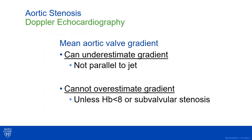Doppler echocardiography cannot overestimate the gradient unless the patient is severely anemic, where decreased blood viscosity means the 4V-squared relationship doesn't apply. But it can underestimate the gradient if you don't have an adequate angle to evaluate the AS in the echo lab — meaning you must evaluate the aortic stenosis from multiple imaging windows. In most cases, the gradient you get from Doppler is going to be underestimating or equivalent to the gradient the patient is actually seeing.